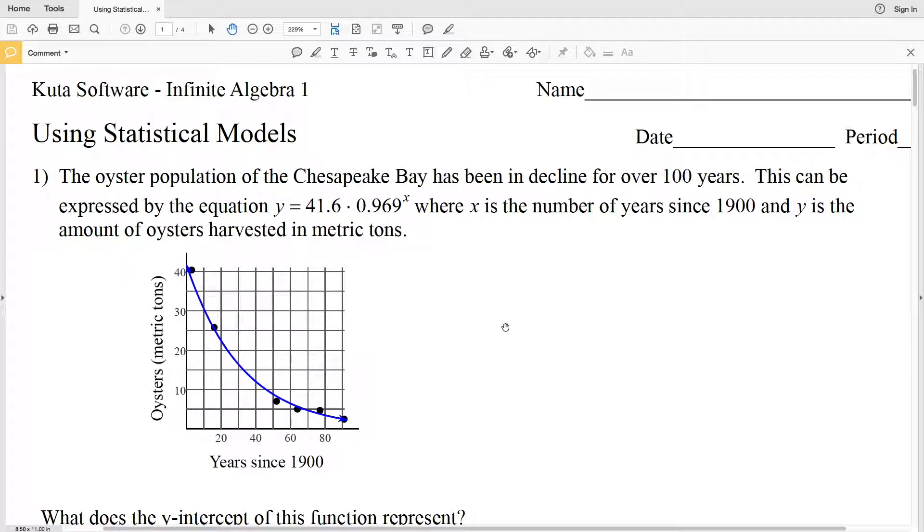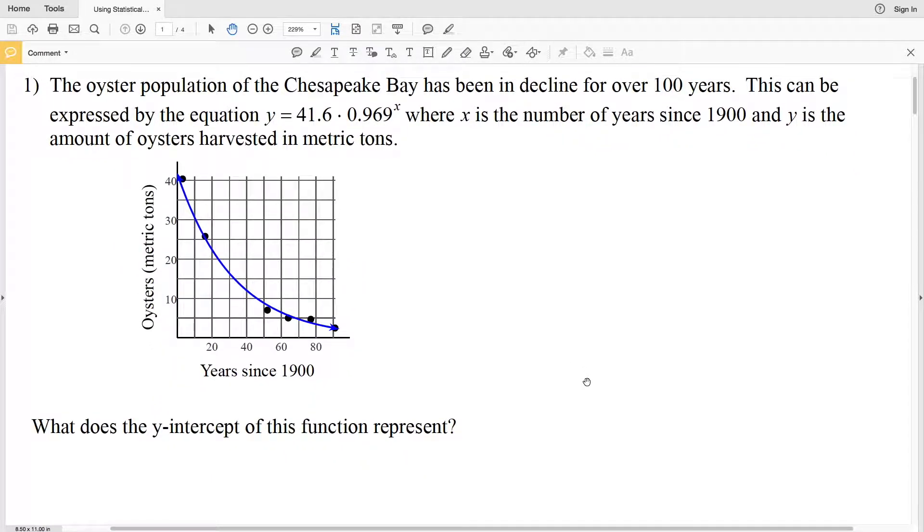Number one says the oyster population of the Chesapeake Bay has been in decline for over 100 years. This can be expressed by the equation y equals 41.6 times 0.969 to the X, where X is the number of years since 1900 and Y is the amount of oysters harvested in metric tons.